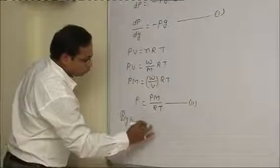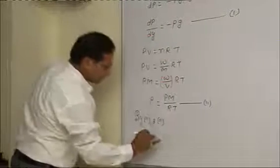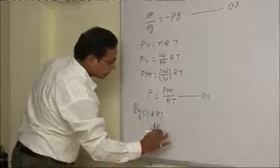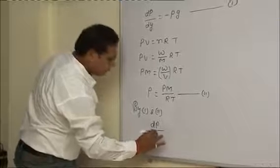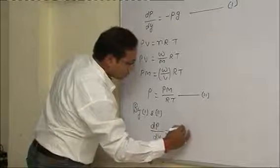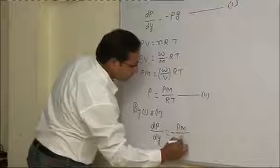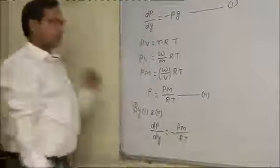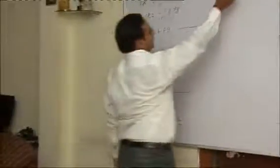By equations one and two we can write dP by dy equals minus PM by RT.